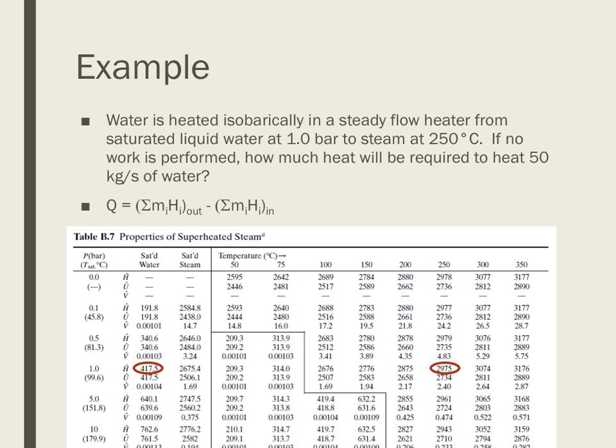So where am I going to find those? Well, it turns out on the superheated steam table this data is available. So I have a pressure of one bar. So pressure is one bar. Tells me that the saturation temperature is 99.6. So that says that the temperature that's coming in is 99.6 degrees C. It tells me that for saturated liquid water, the enthalpy is 417.5. And at this pressure and a temperature of 250, the enthalpy is 2975.